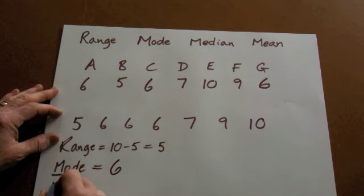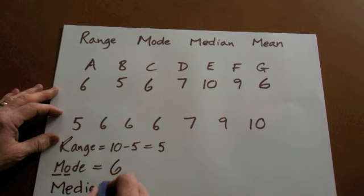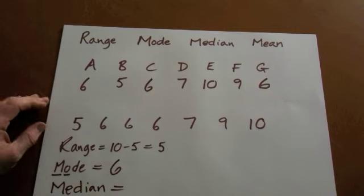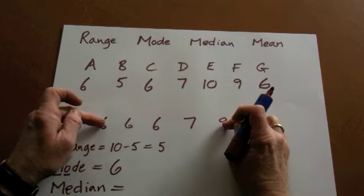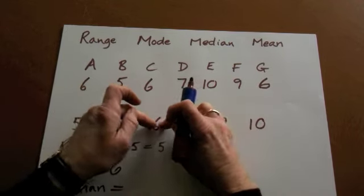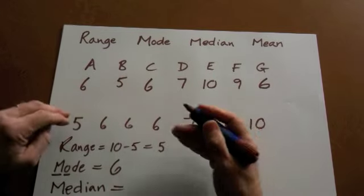The median. Median is the one in the middle when they're in order. So that's why they must be in order. So let's find the one in the middle. If we work from each end, the one in the middle is six. There's three each side of it.